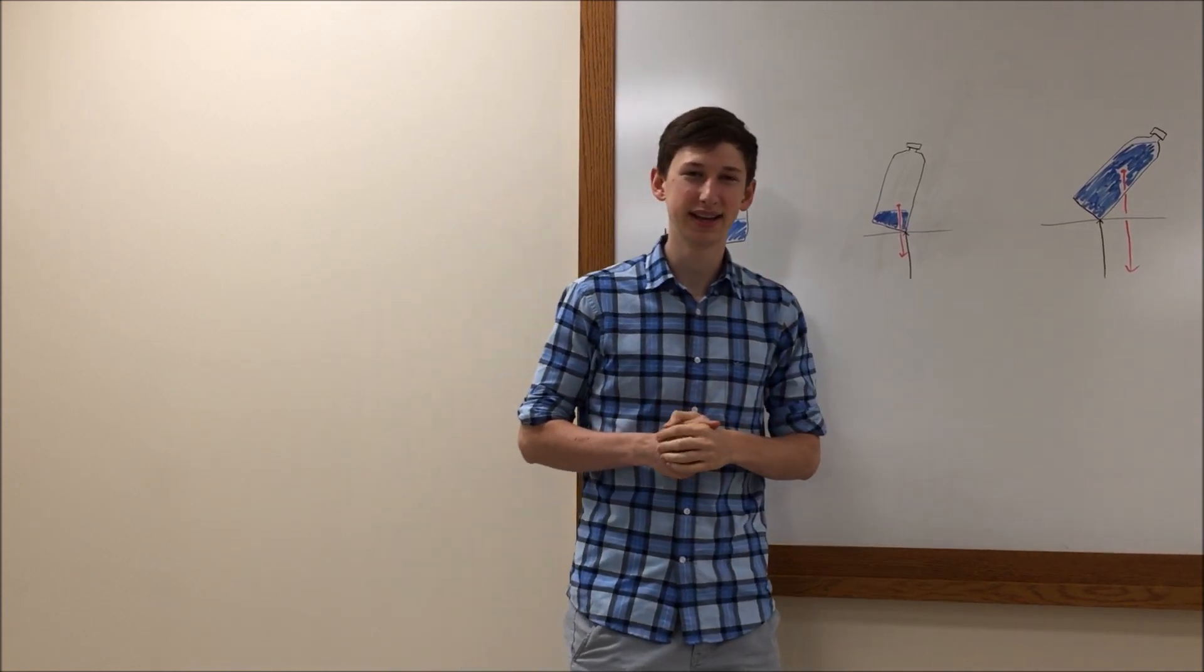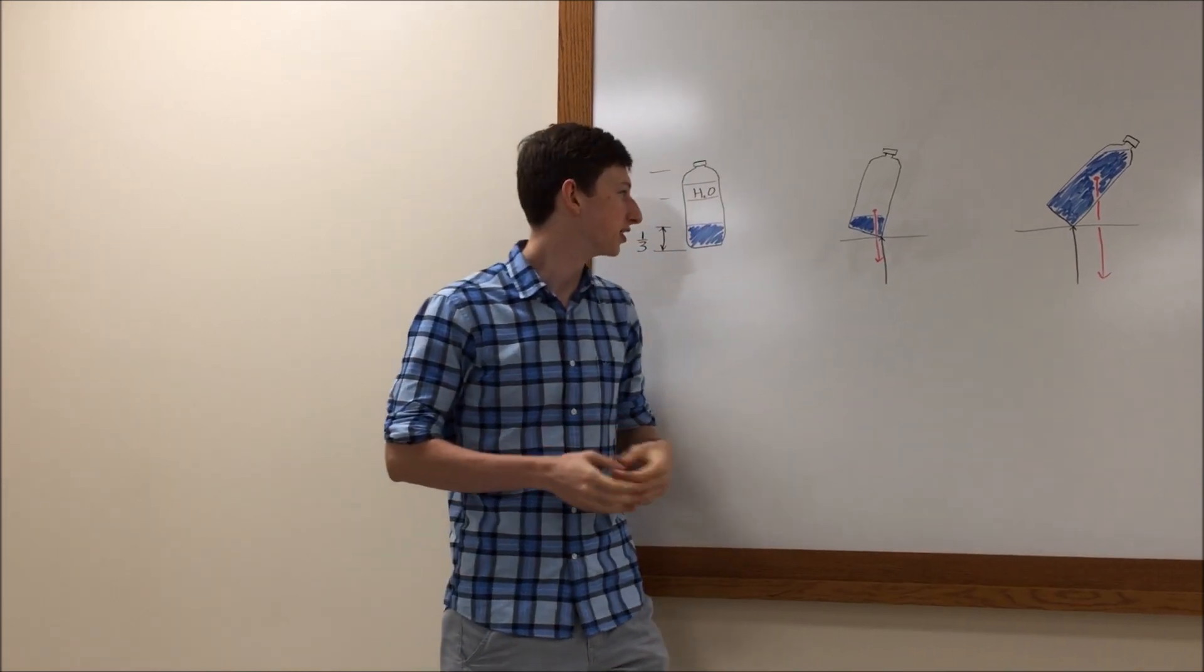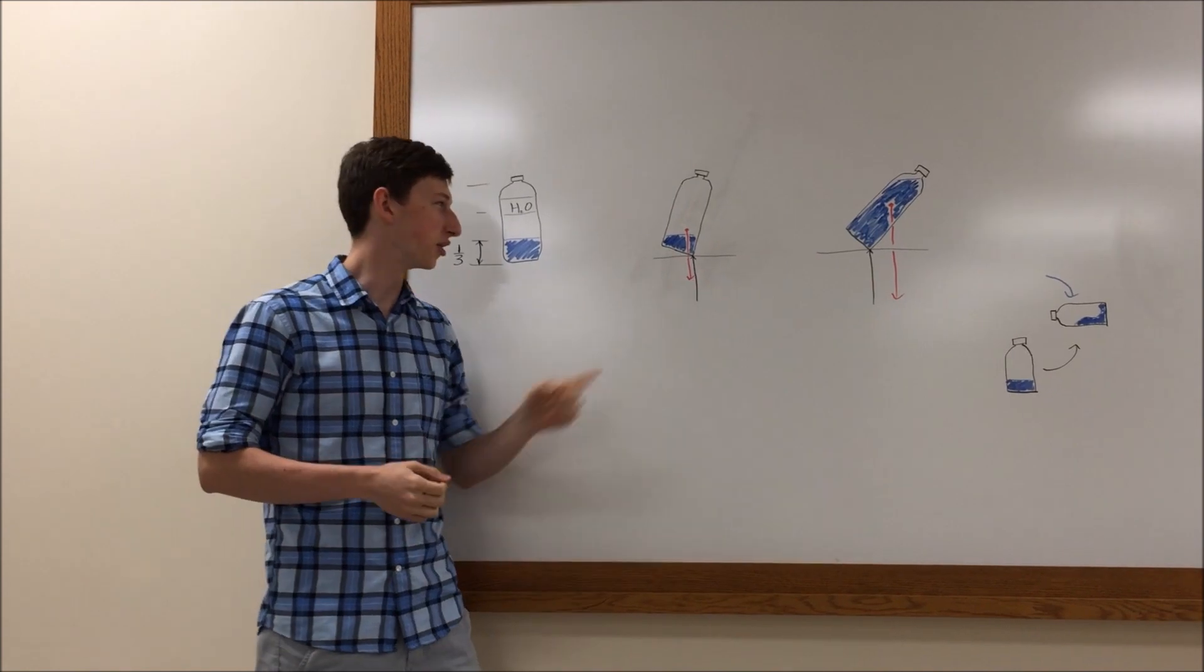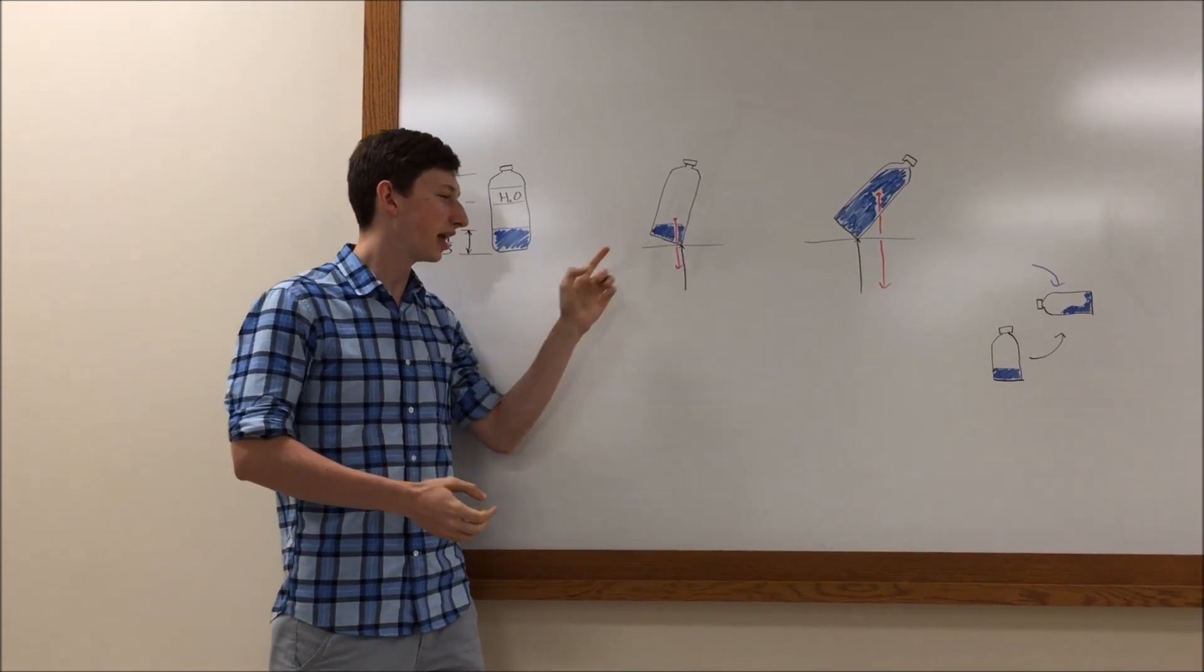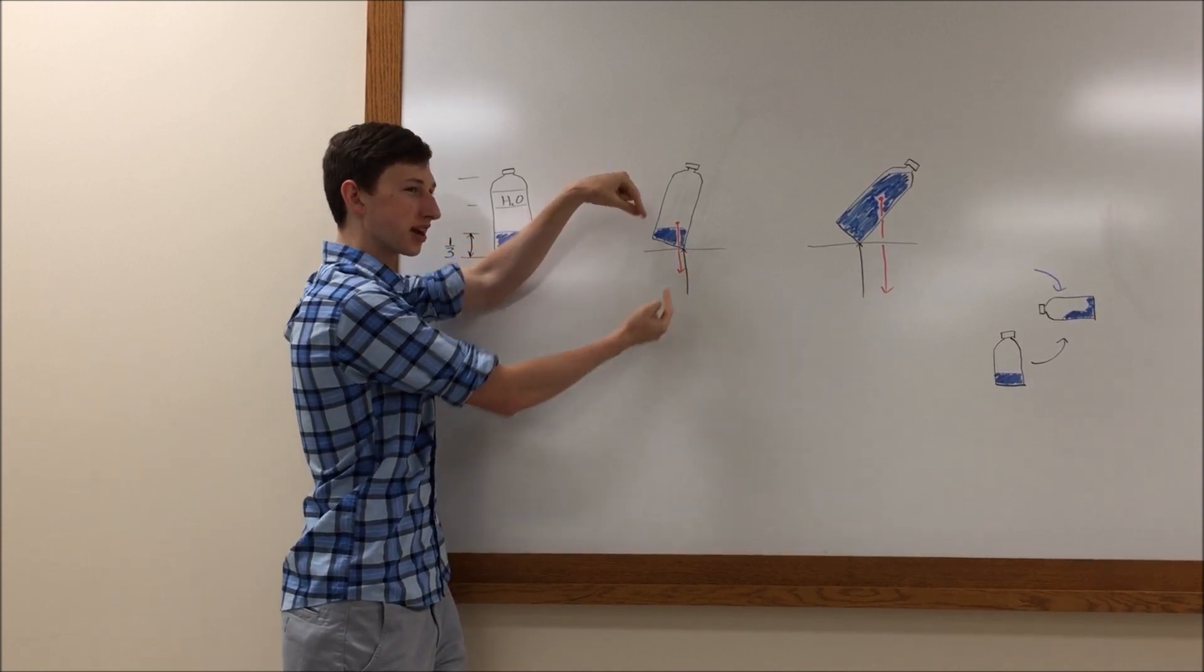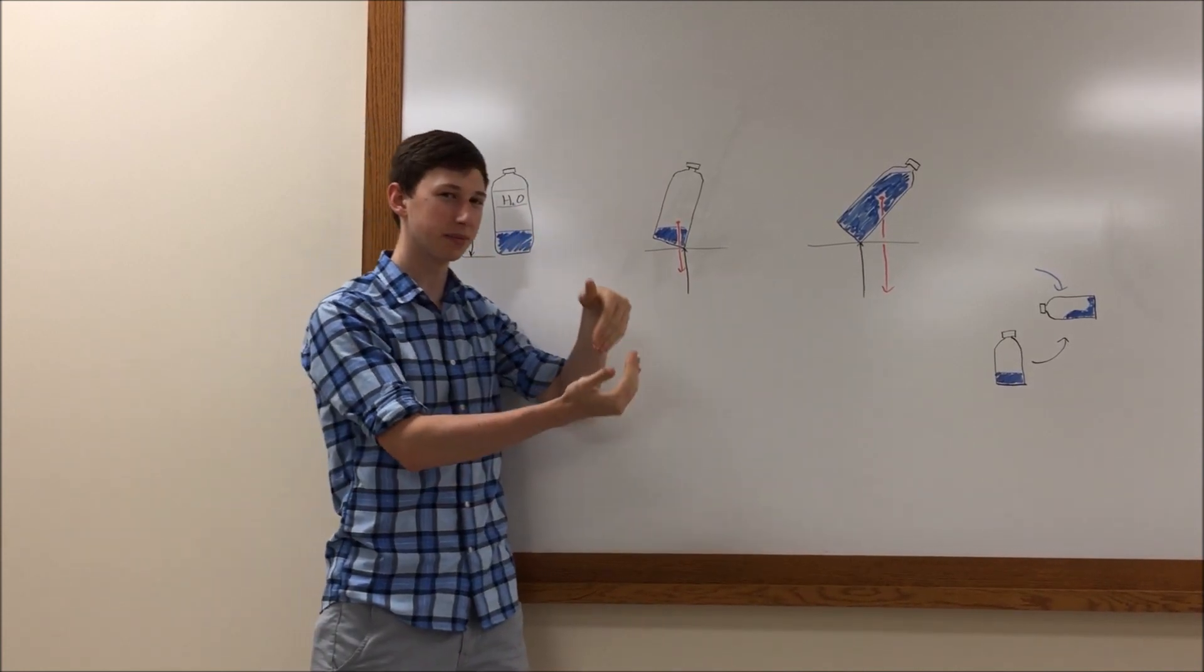The first part is that it lowers the center of gravity of the bottle. So as you can see here, here's a bottle with a low center of gravity, denoted by that red dot. And you can see that this center of gravity pushes down on the bottle, and the table pushes up on the bottle, and this rights the bottle.